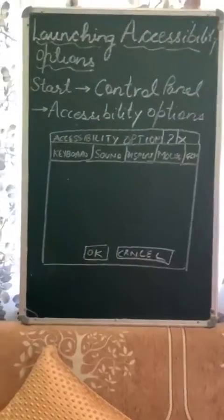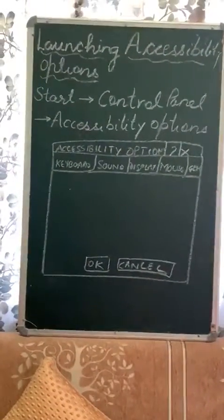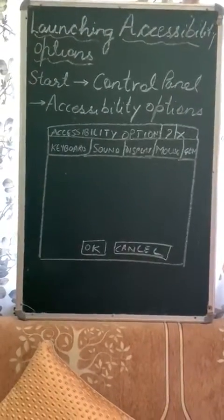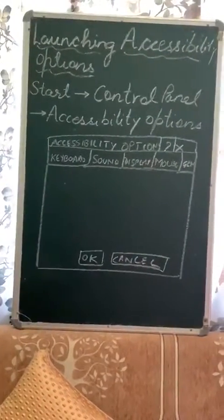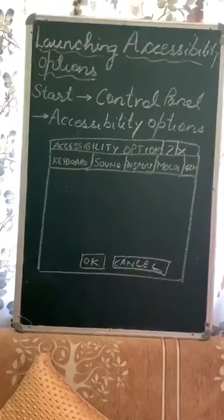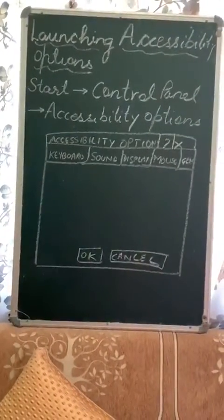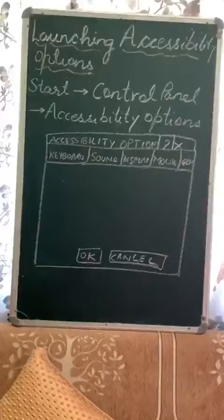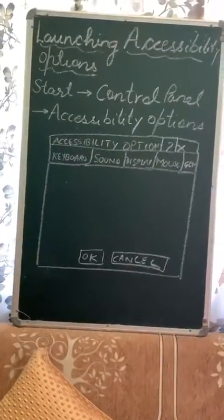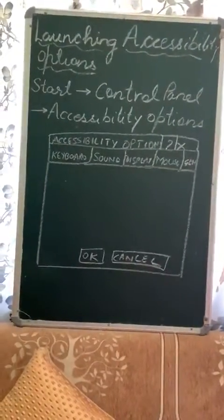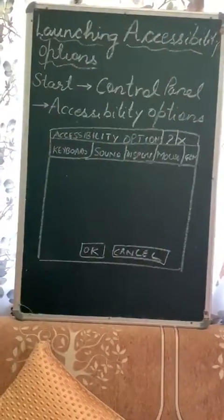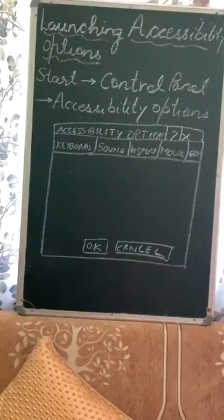Hello everybody. In this video we'll be dealing with the topic of launching accessibility options. Accessibility means that a computer is user-friendly to all people around the world, even those who may be disabled. Now, how to launch them?